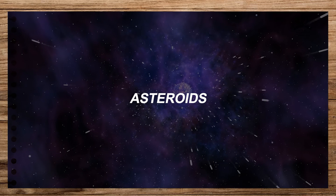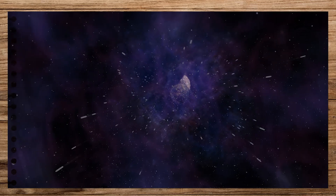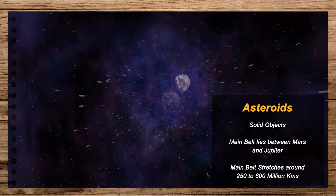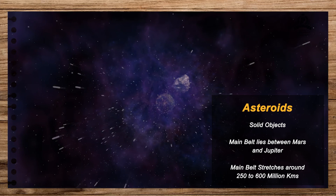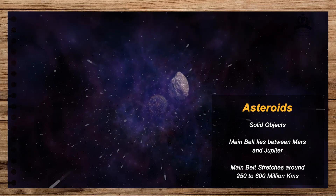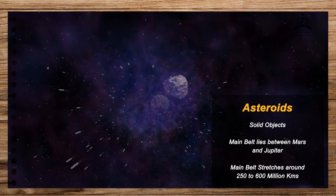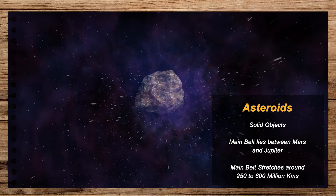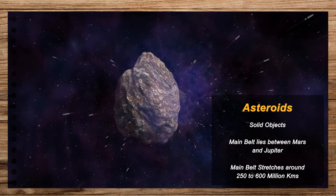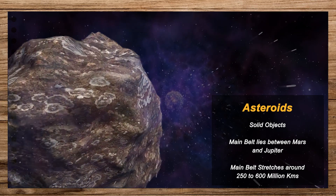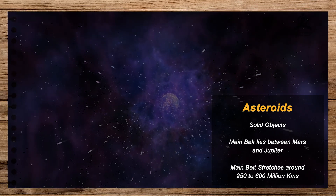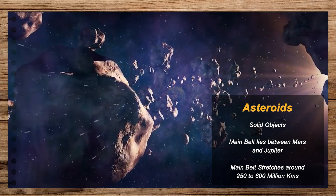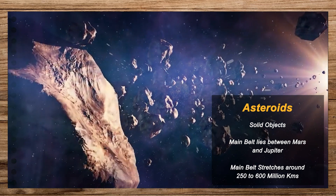Asteroids are small planet-like solid objects found in the solar system. They are also called planetoids or minor planets. Each asteroid follows its own orbit around the Sun. The main belt, which has billions of asteroids, lies between the orbits of Mars and Jupiter. This belt stretches from about 250 million to 600 million kilometers from the Sun.